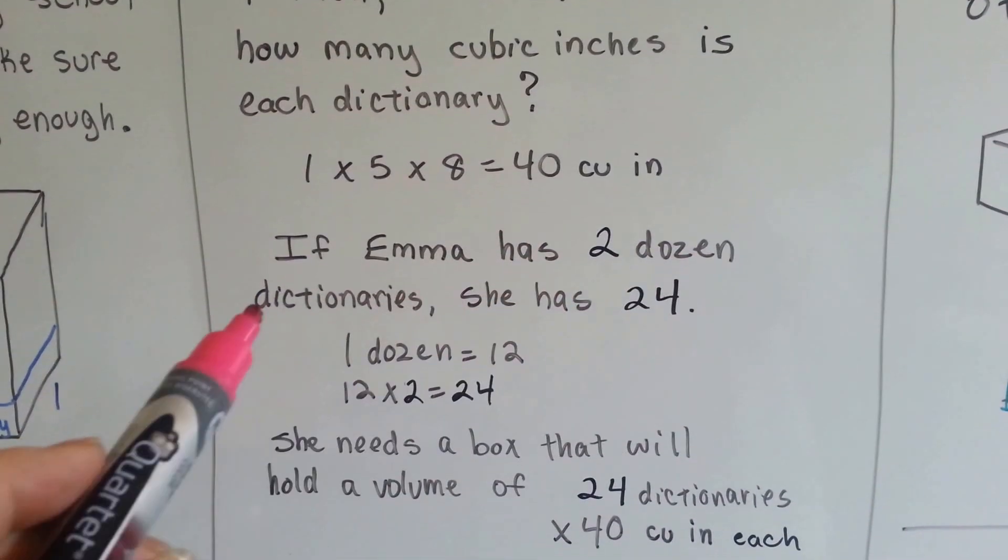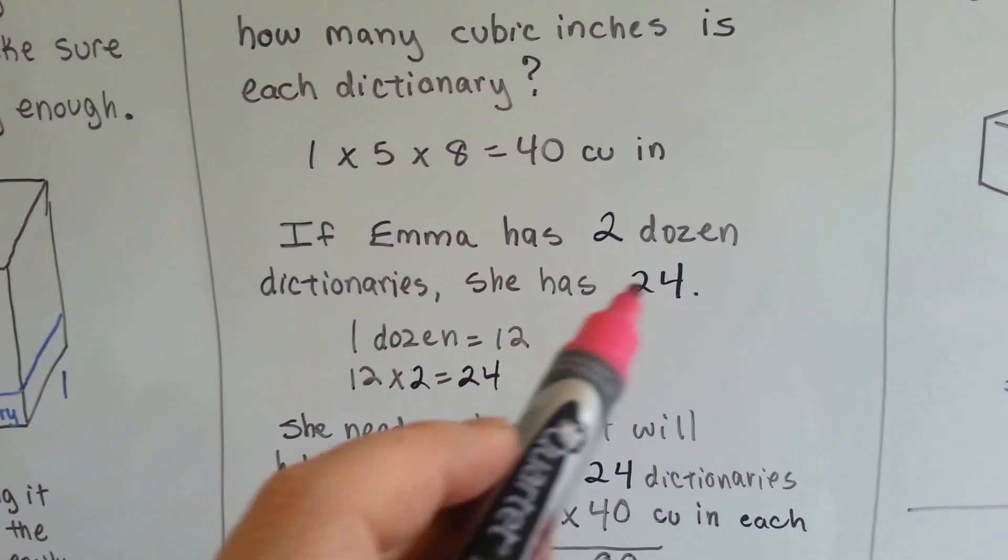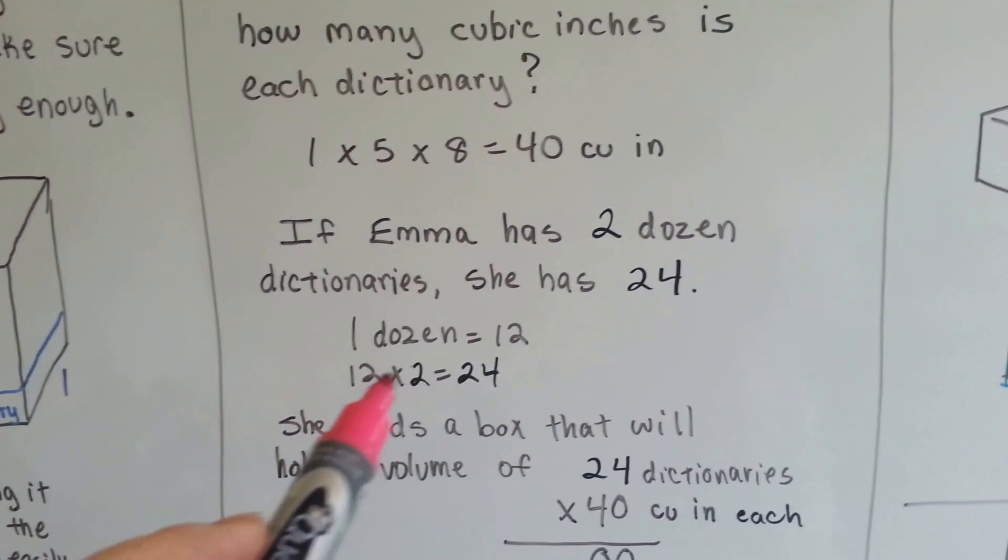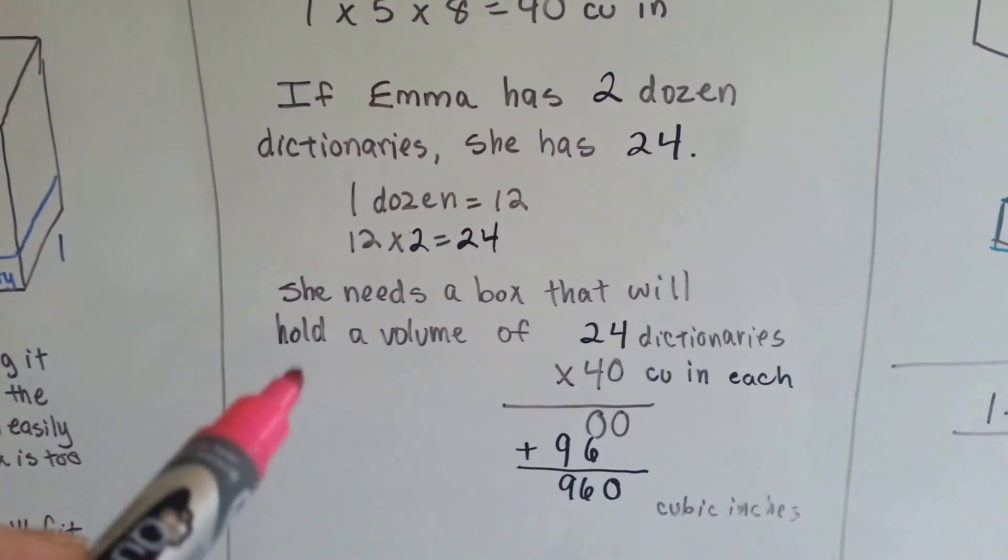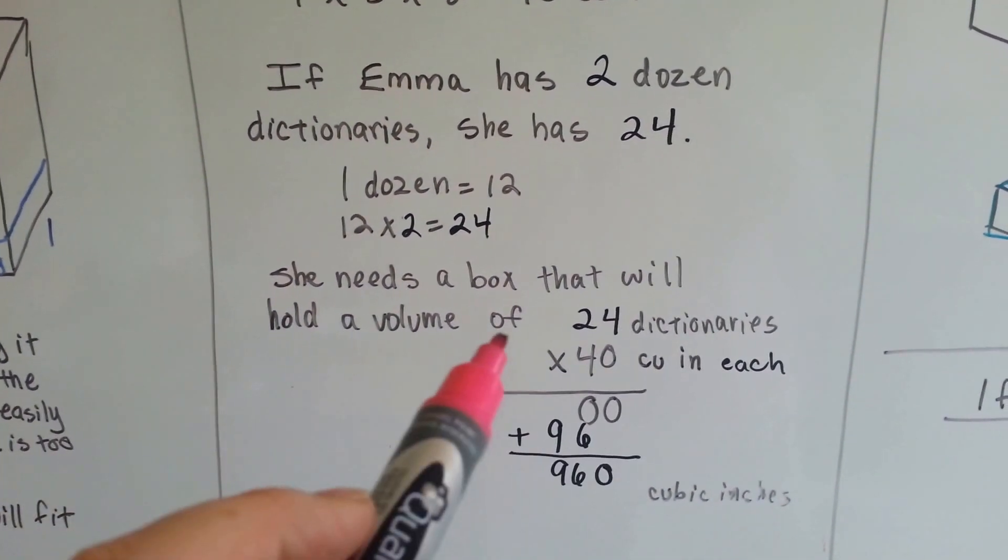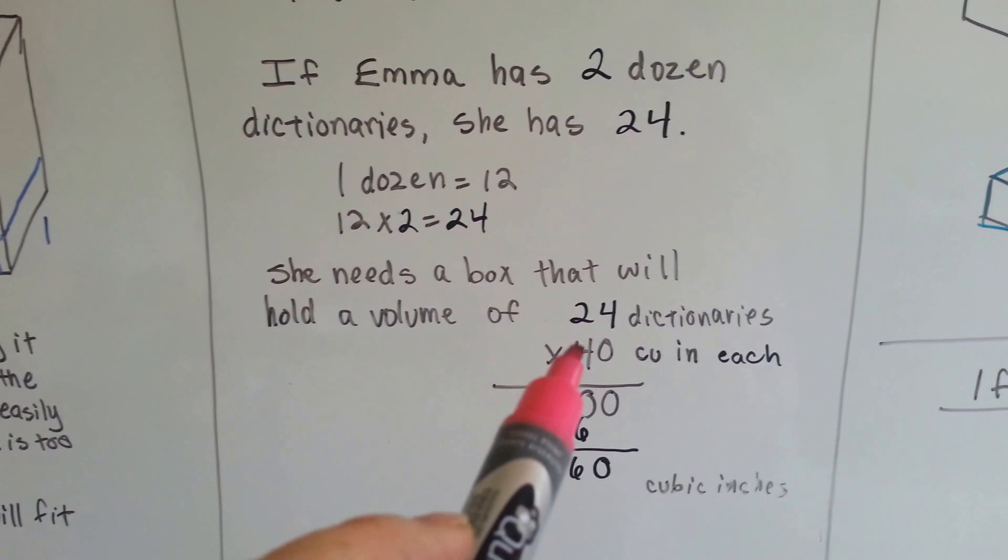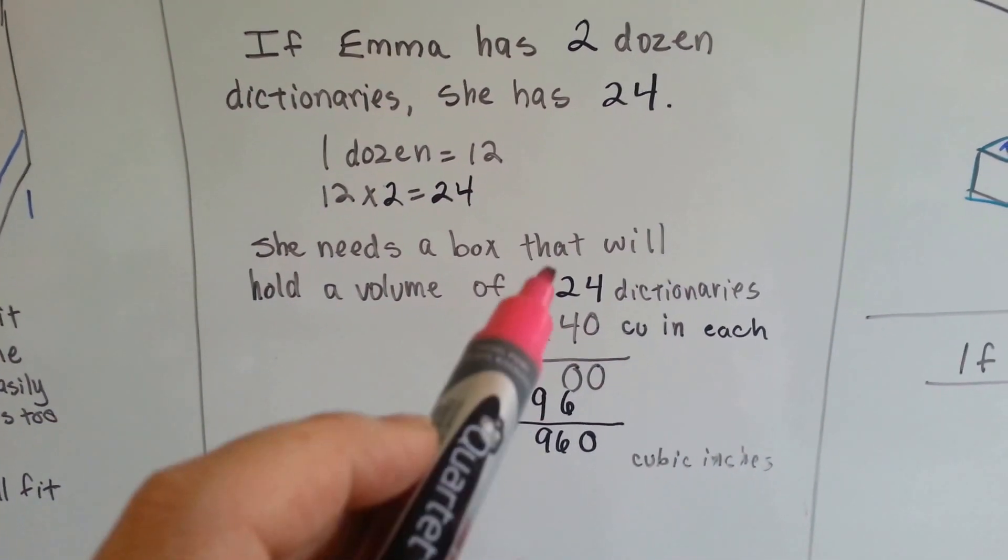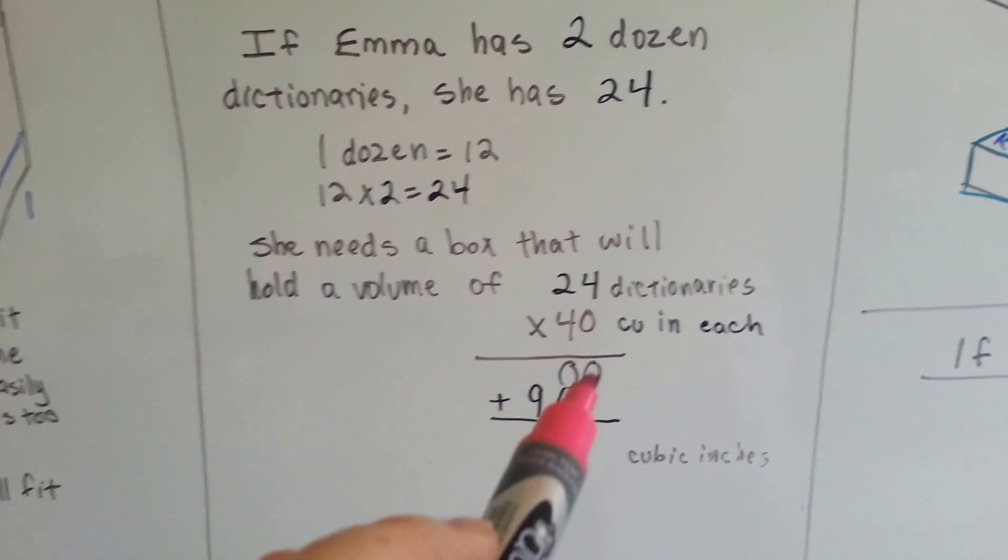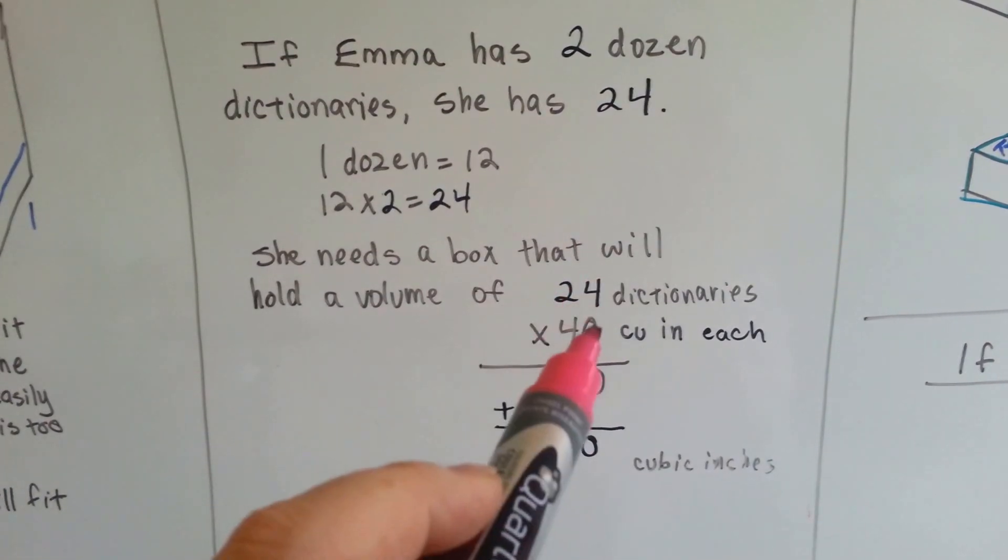If she's got two dozen of them, a dozen is twelve, she has twenty-four, because twelve times two is twenty-four. She needs to find a box that will hold a volume of twenty-four dictionaries that are forty cubic inches each. Twenty-four times forty,